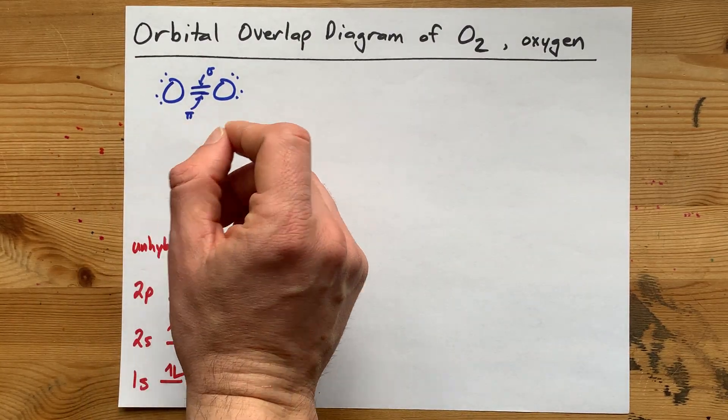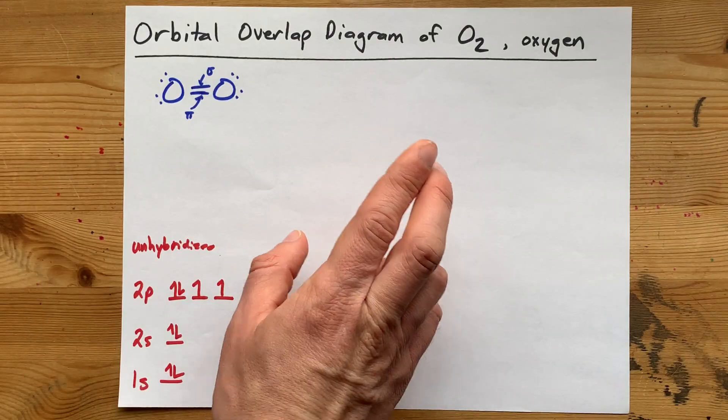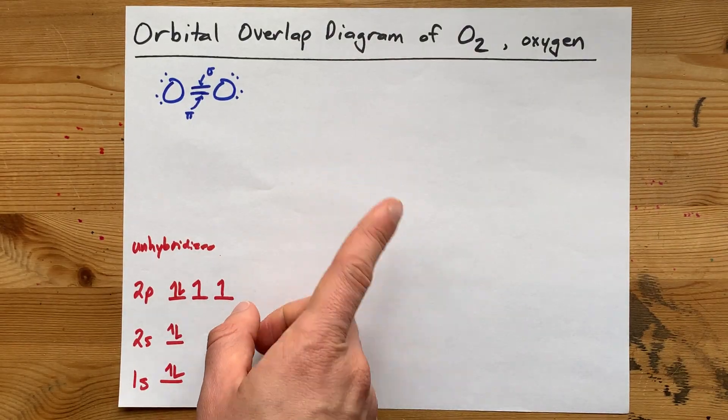That pi bond means that you need a leftover 2p orbital when you hybridize. Let me show you.